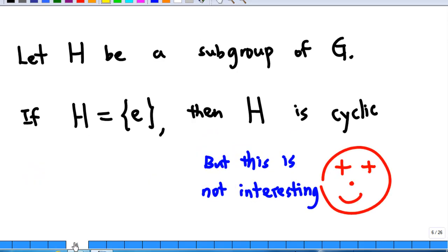Now, let H be a subgroup of G. If H is a trivial subgroup, then obviously H is cyclic with generator e. But this is not very interesting.